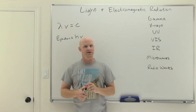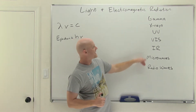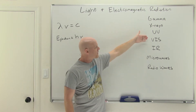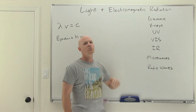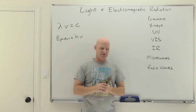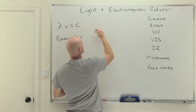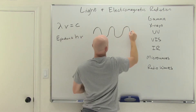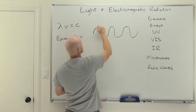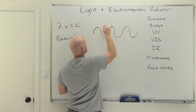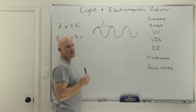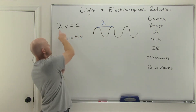Before we get too much further, we want to talk about the entire electromagnetic spectrum, of which visible light is just a small part. The visible spectrum is just a narrow range of both wavelengths and frequencies and energies associated with light. If we look at light as being somewhat wave-like, we can see that taking peak to peak, or trough to trough — any two analogous points and the distance between them — that's what we mean by wavelength. We use the Greek letter lambda (λ) to represent wavelength.